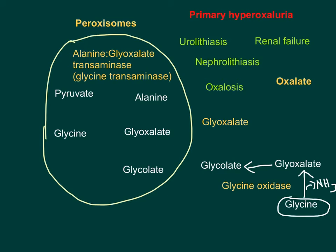Once glycolate is synthesized, it is transported into the peroxisome, where further catabolism of glycolate takes place. Inside the peroxisome, glycolate is oxidized back into glyoxalate by glycolate oxidase enzyme.